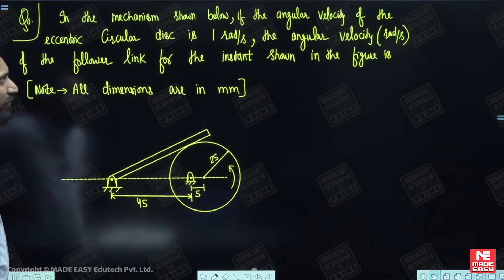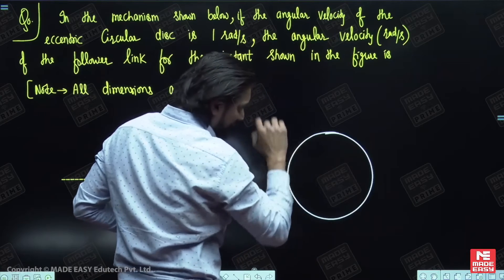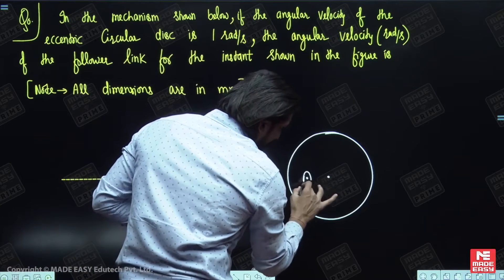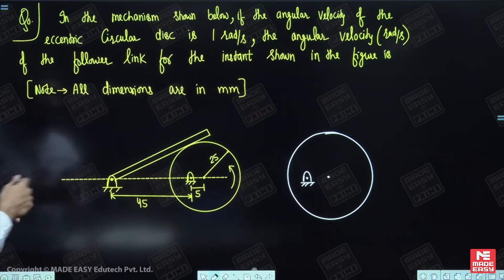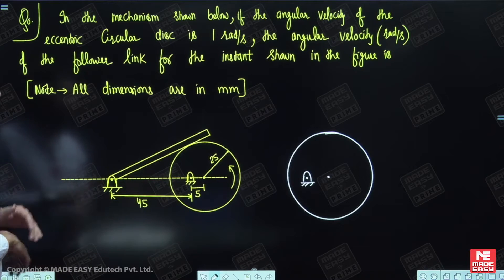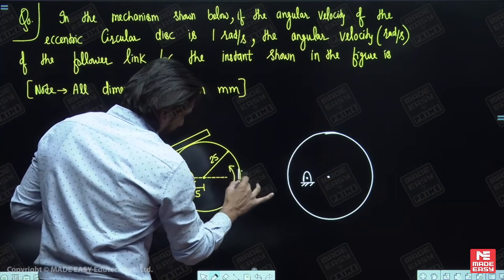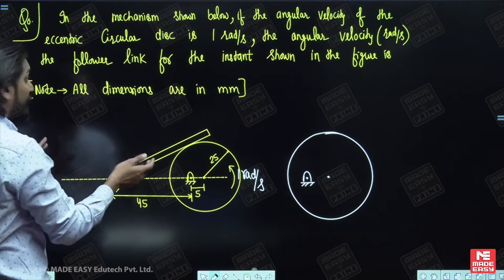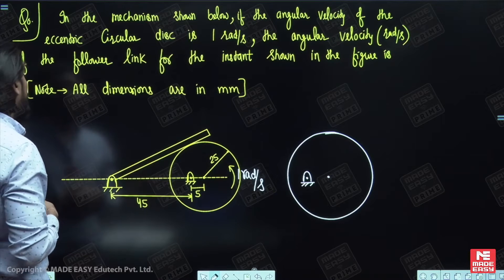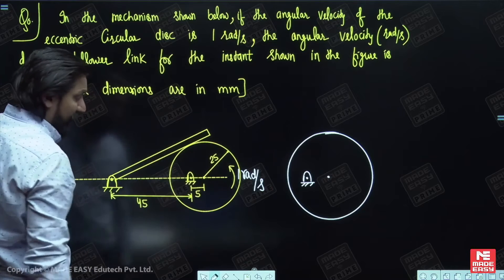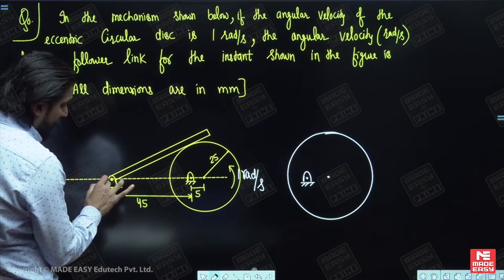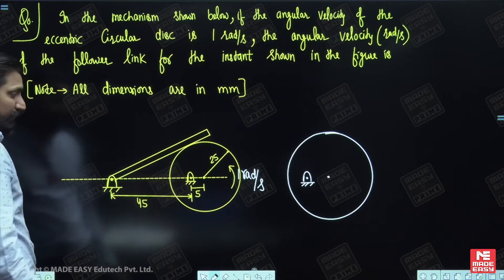In the mechanism shown below, if the angular velocity of the eccentric circular disc is 1 radian per second — if we hinge a disc from the center it will not make a cam, but if we hinge it away from the center it will become an eccentric circular disc cam. The angular velocity is given as 1 radian per second. All dimensions are in millimeters: this is 5 mm, the radius of the circular disc is 25 mm, and the axis of rotation of the follower and cam are 45 mm apart.